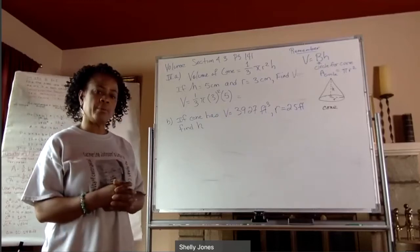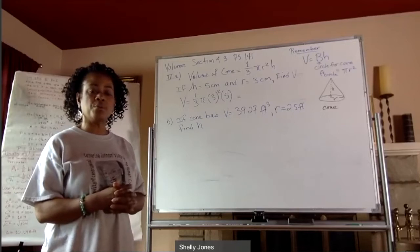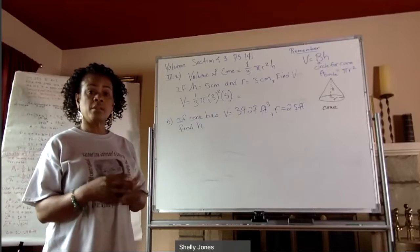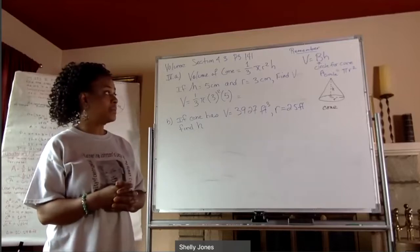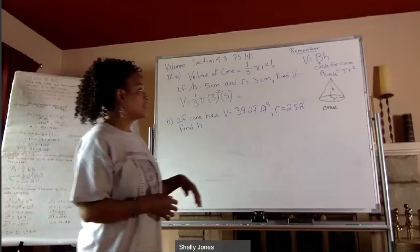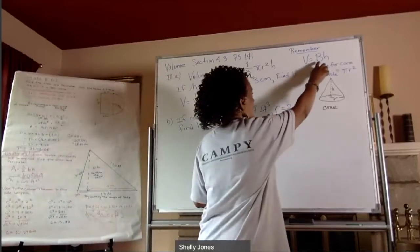We talked about yesterday how the volume for a prism is the area of the base times the height. So the area of the base times the height. And so the big B is the area of the base.